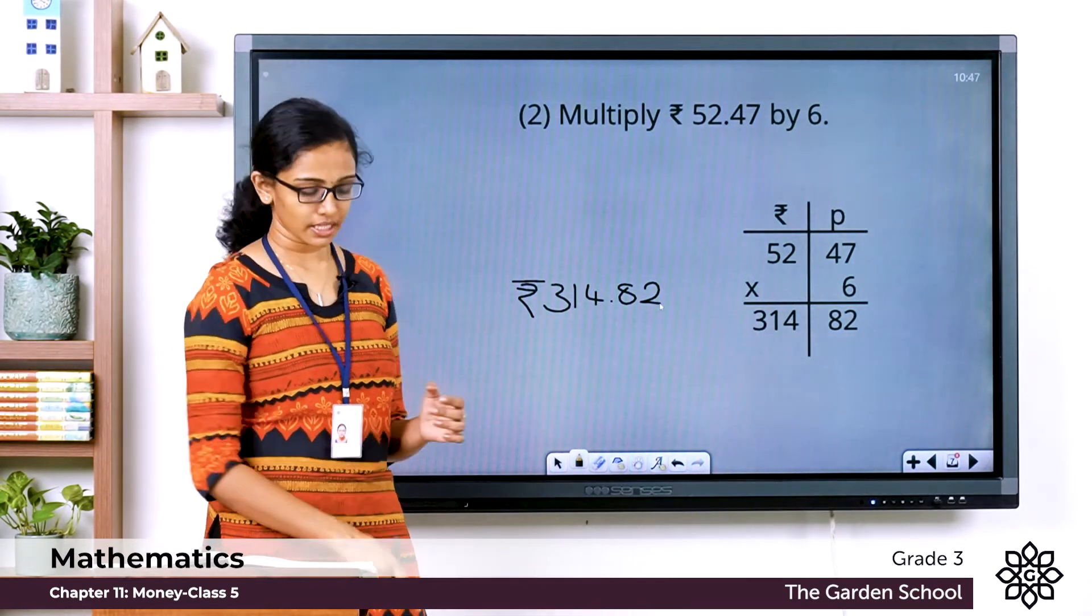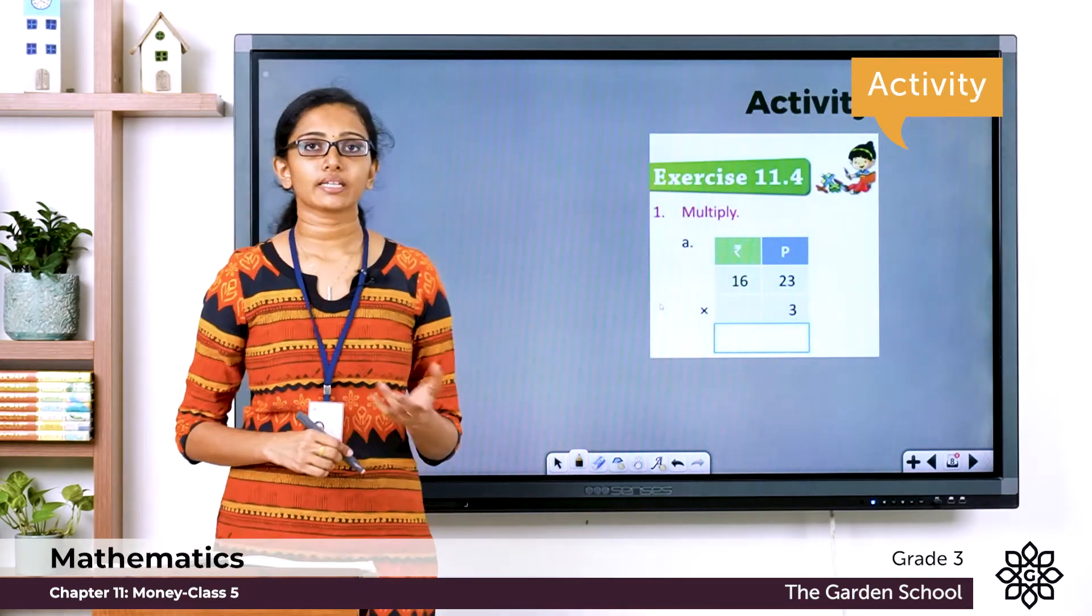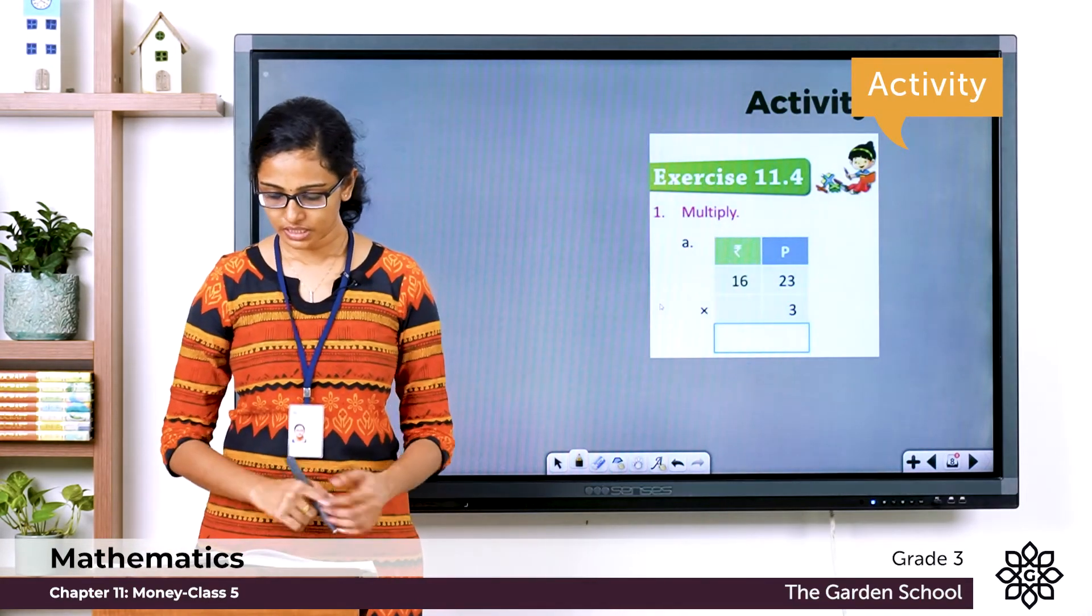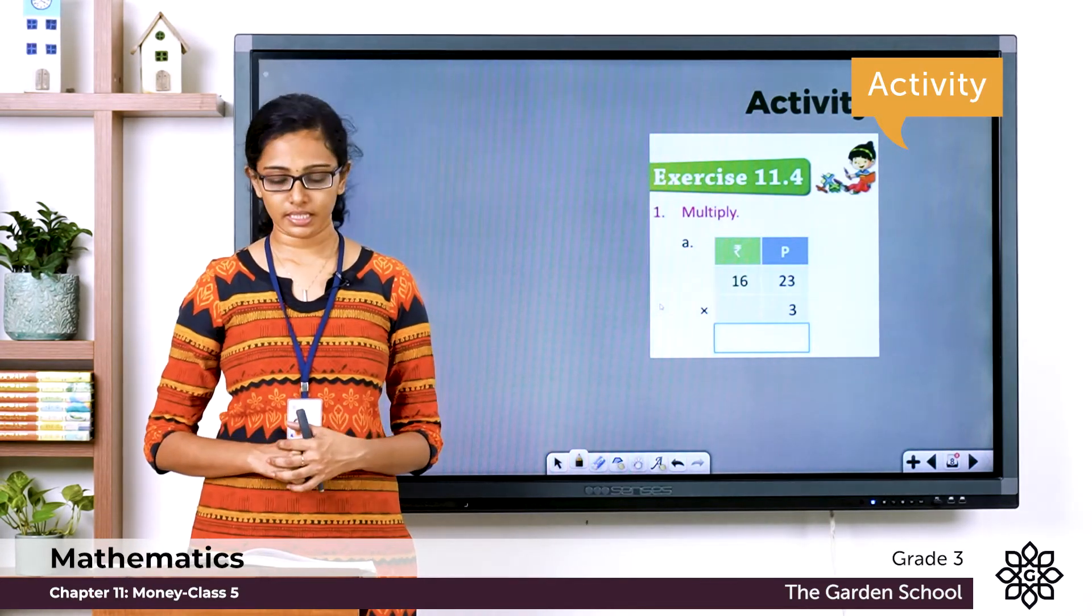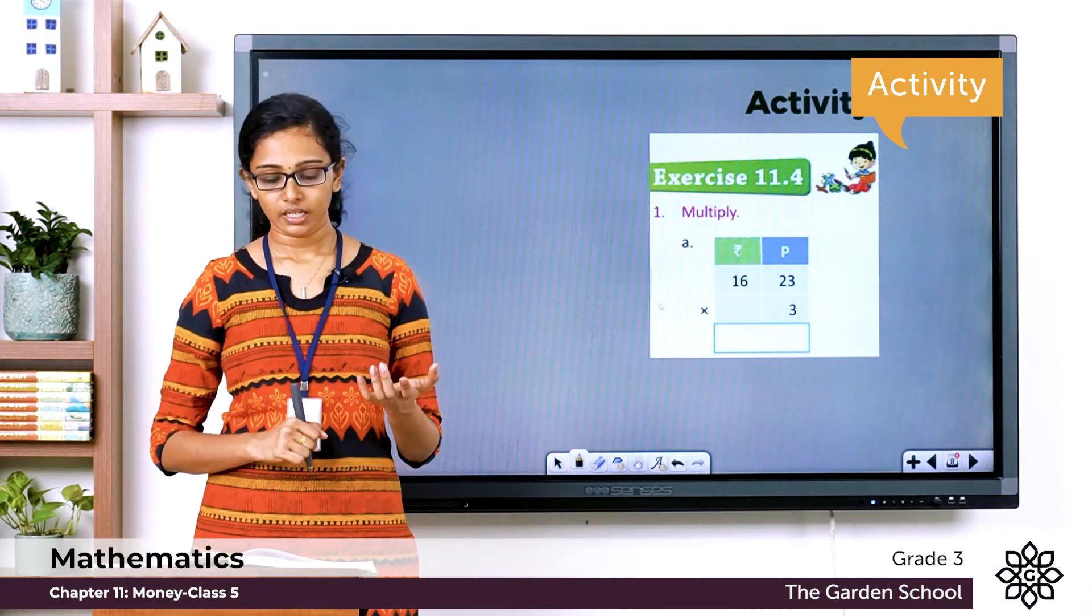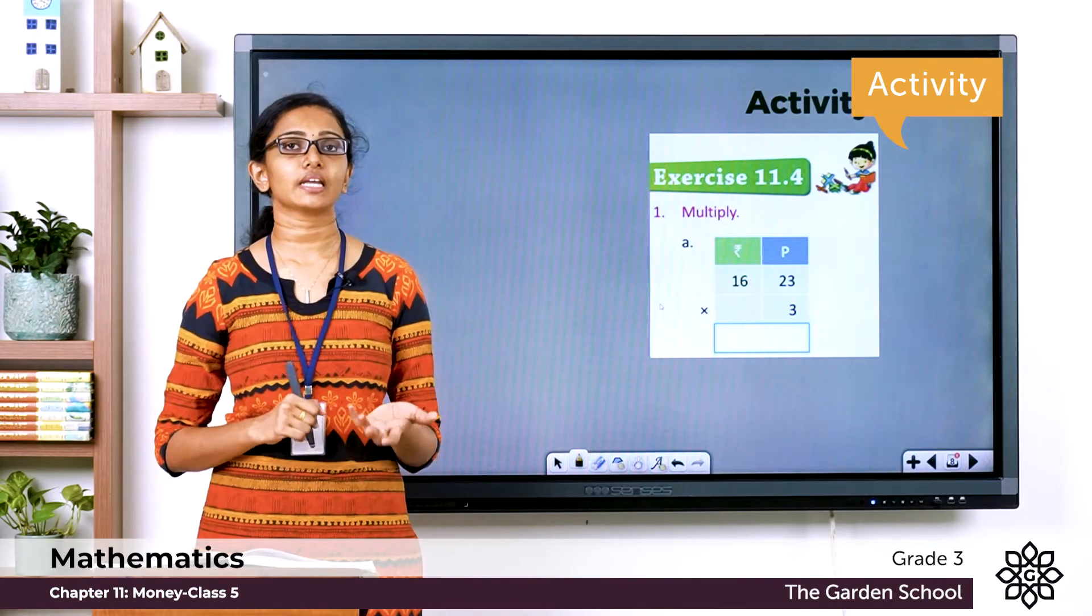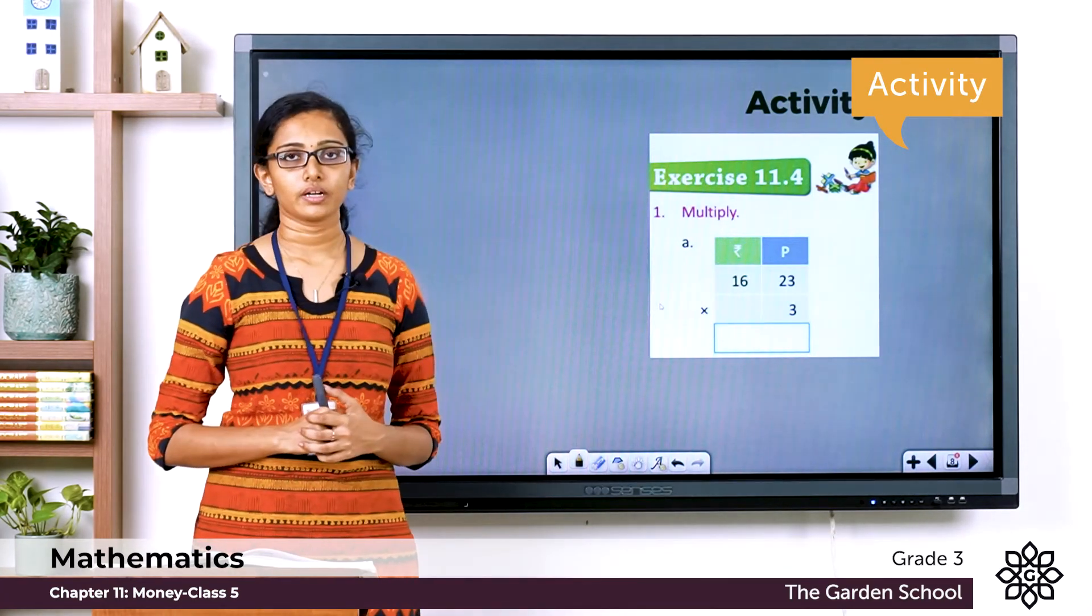Now we will do an activity. All of you please turn to exercise 11.4 which is in page number 157 of your textbook. The first question is to multiply, question A of question number 1. So 1A.